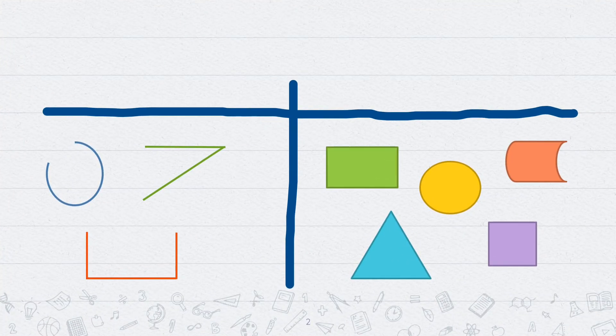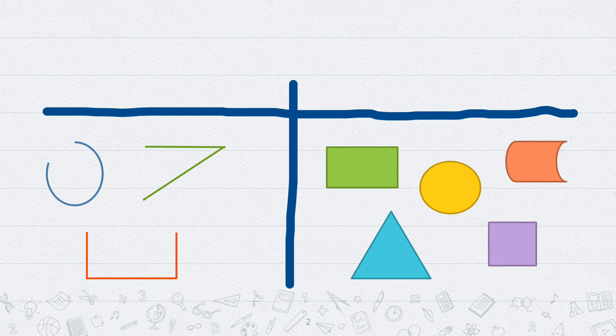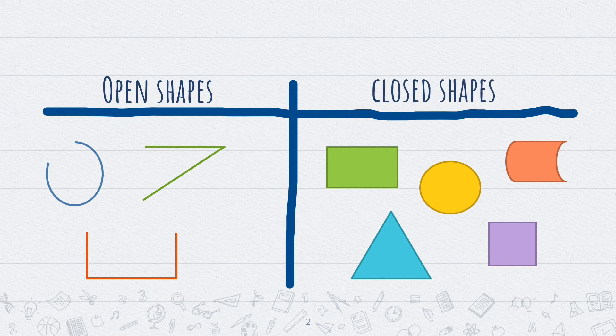Look at the figures given in this T-chart. In column number 1 we have shapes that do not have their ends meeting, so they are called open shapes. And in the second column we have shapes where the ends of its lines are meeting, so they are called closed shapes.